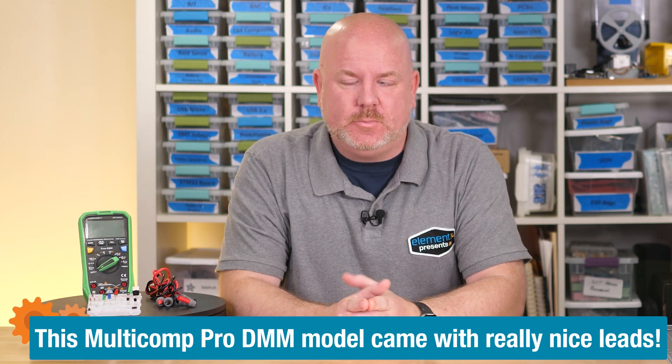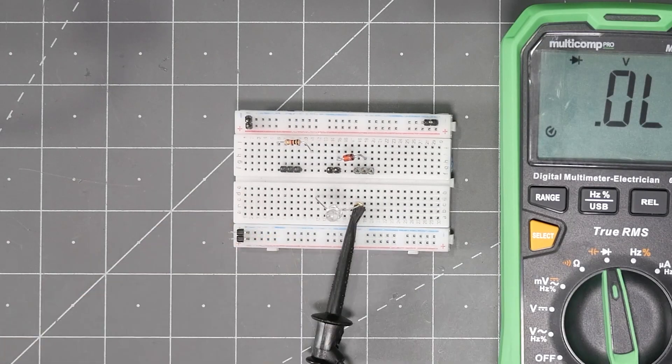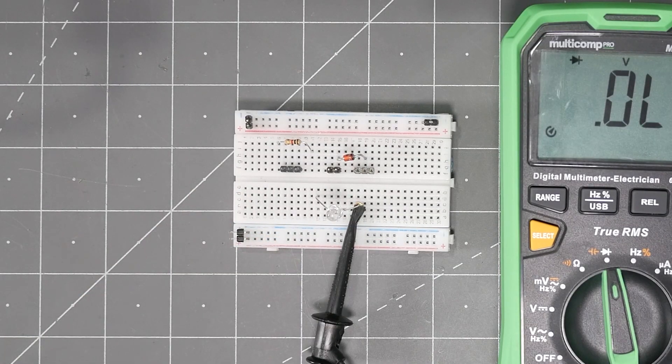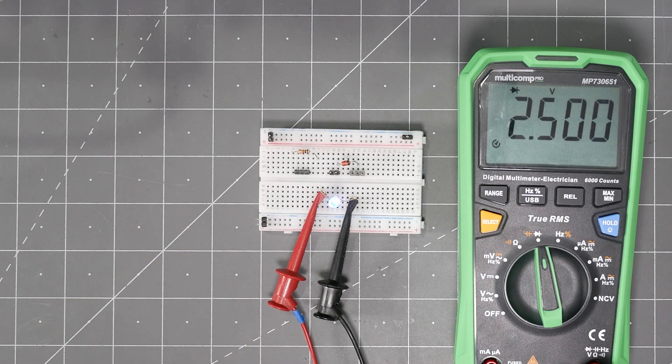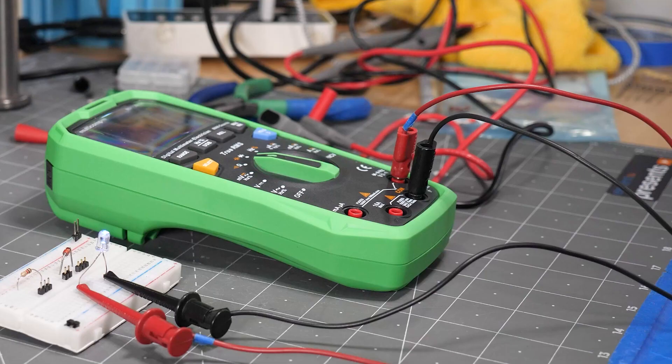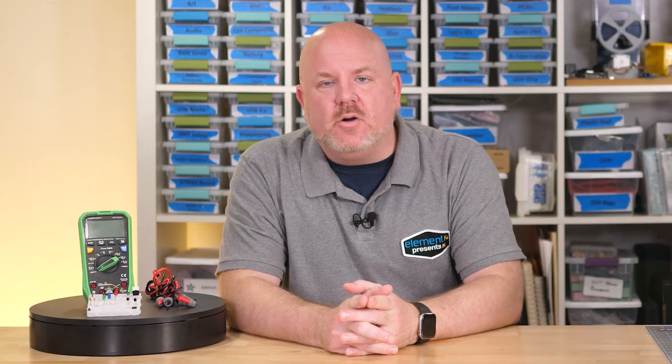Before closing, I have one more tip, and it involves the actual tips. Get new ones. Or, actually, just get some different ones. For example, mini-grabbers with banana plugs work great for hands-off measurements. I especially like to use these as a ground connection so that I only need to use one probe to poke around a circuit. Sometimes I use banana to banana cables to connect directly to power supplies.